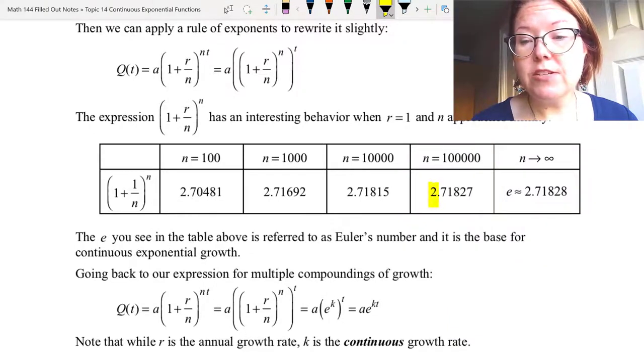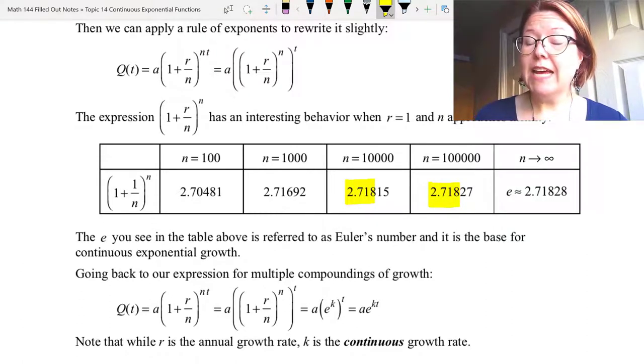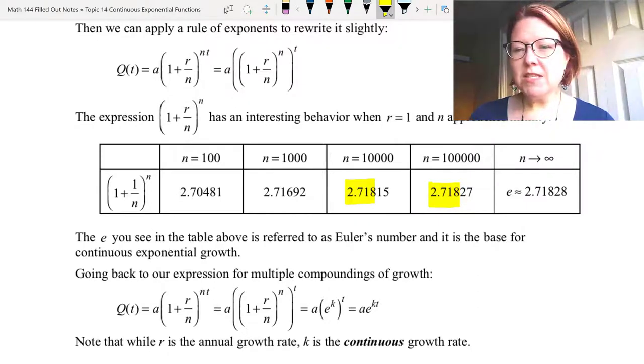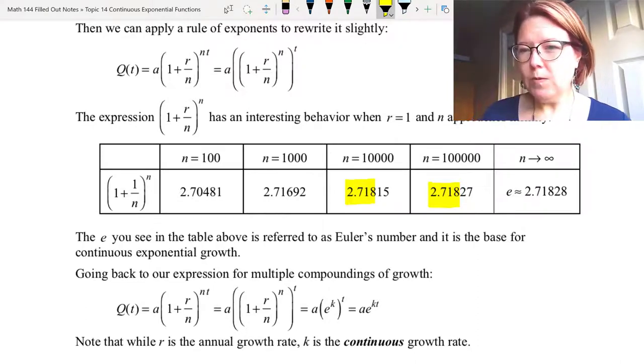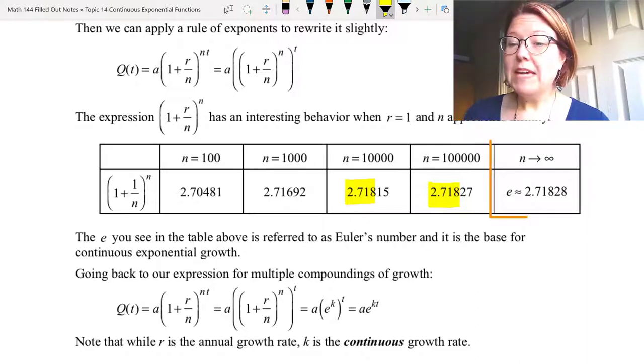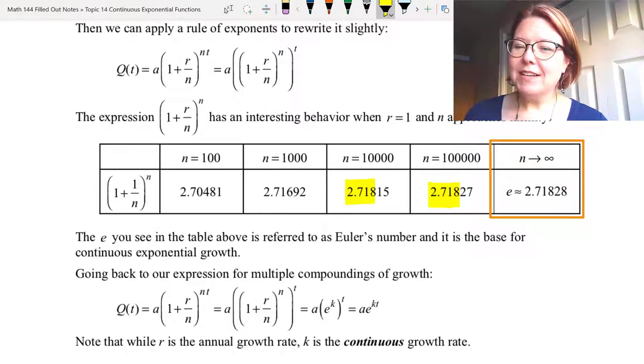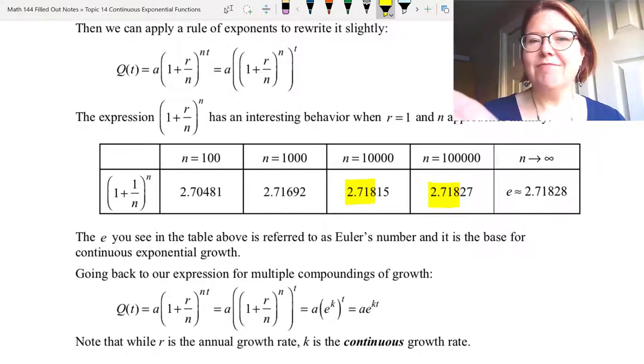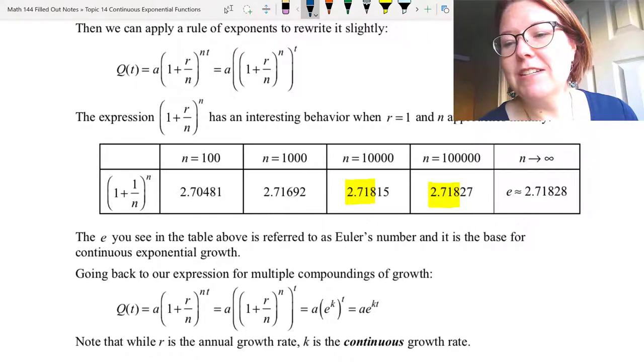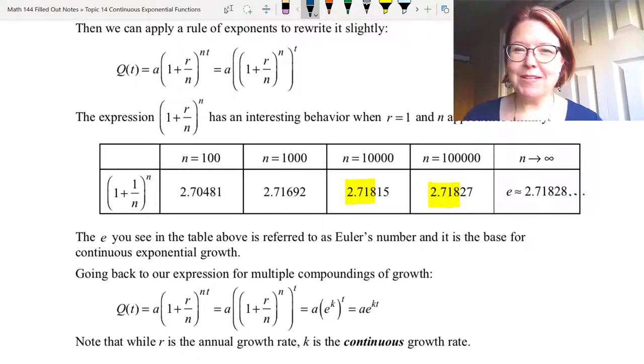You can see that we have stabilization to three decimal places when we get to 10,000 and 100,000. In fact, this result is what we call Euler's number. If we continue to let n approach infinity, we get what we call the number e. That's a lowercase e, Euler's number: 2.71828 dot dot dot. It doesn't round nicely. It's considered a transcendental number, a number that doesn't repeat and is not predictable.